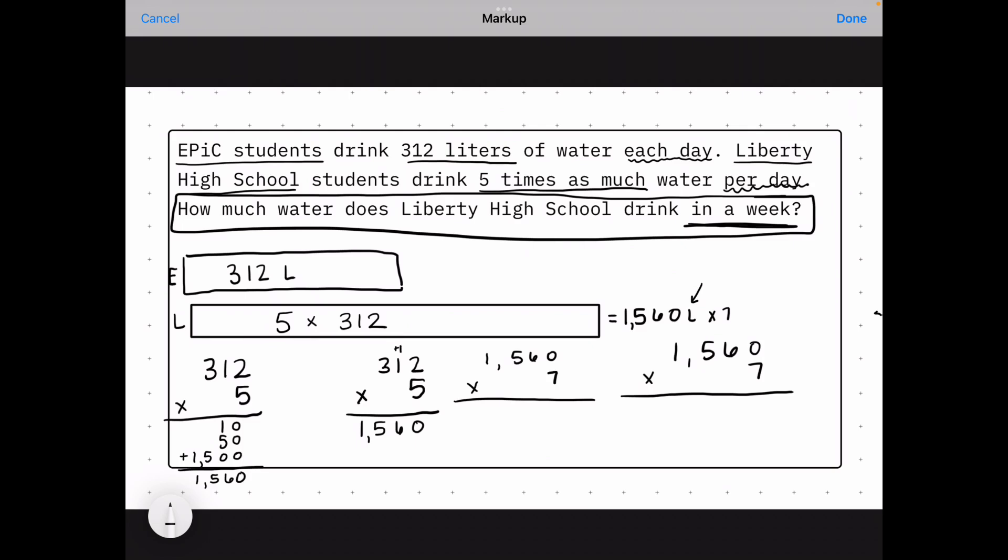Partial products, 7 times 0 is 0, 7 times 60 is 420, 7 times 500 is 3,500, and 7 times 1,000 is 7,000. Adding up those products, I get an answer of 10,920.